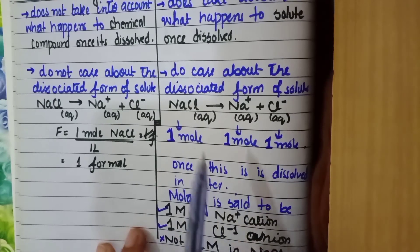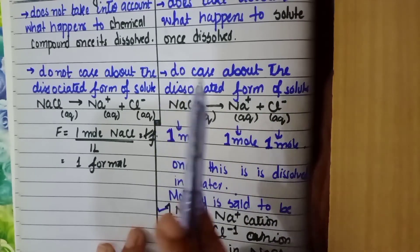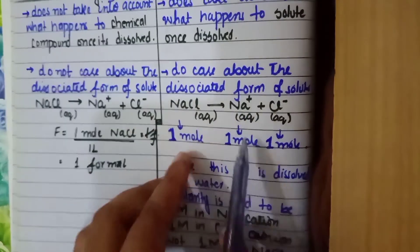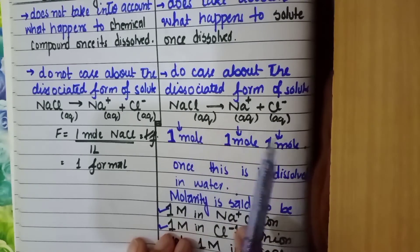It won't be saying one molar NaCl. It will be saying one molar sodium ion and one molar chloride ion. So it is considering the end consequence of the compound dissolved.